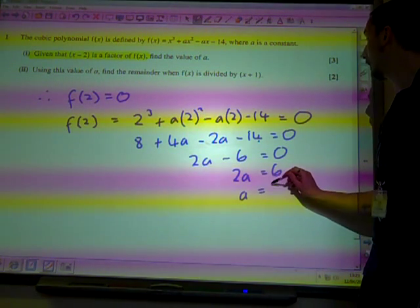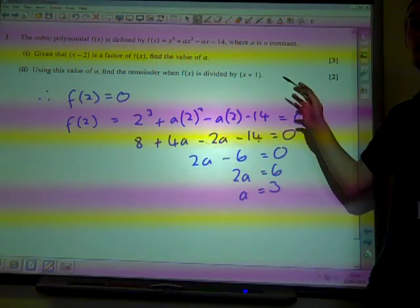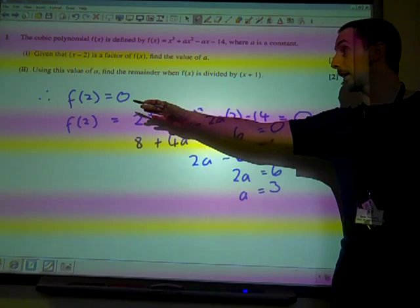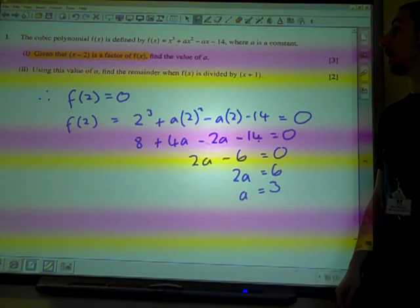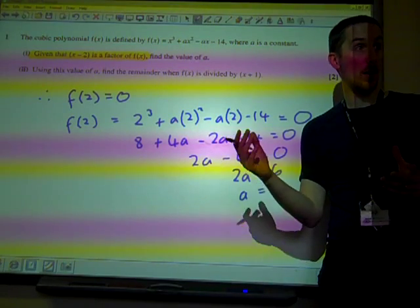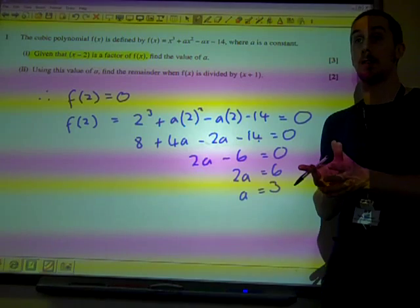2a is 6, so a is 3. And it feels like an easy 3 marks, but the key was knowing what the question was telling us at the start. We're not going to get drawn into doing long division, because long division is a difficult way to solve these things.